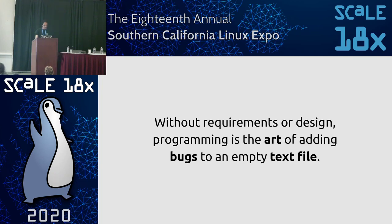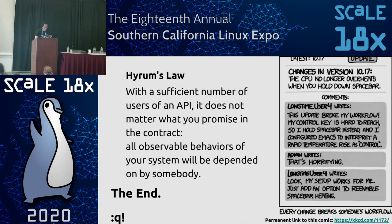This was a short and sweet talk, but I want to leave with two quotes. First: 'Without requirements or design, programming is the art of adding bugs to an empty text file.' And last but not least, Hyrum's Law: 'With a sufficient number of users of an API, it does not matter what you promise in the contract — all observable behaviors of your system will be depended upon by somebody.'